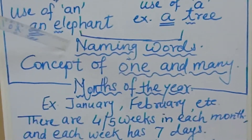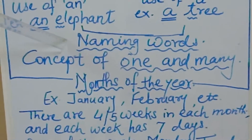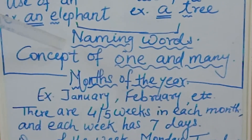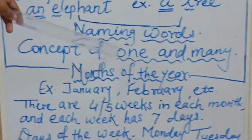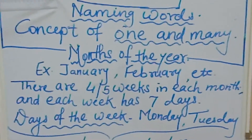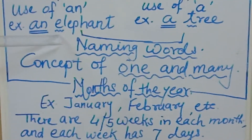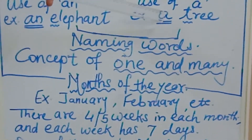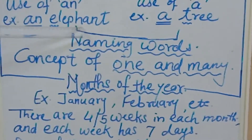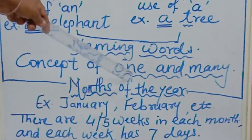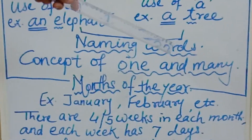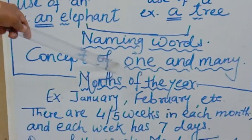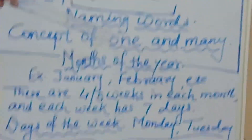When we use naming words, some words are used in a plural form and some words are used in a singular form. Singular means one. For example, here you are able to see 'elephant' — this is only one animal. And 'a tree' — this is only one tree. But when we add S or ES, at that time it turns into many. Last year you all learnt the concept of one and many as well.